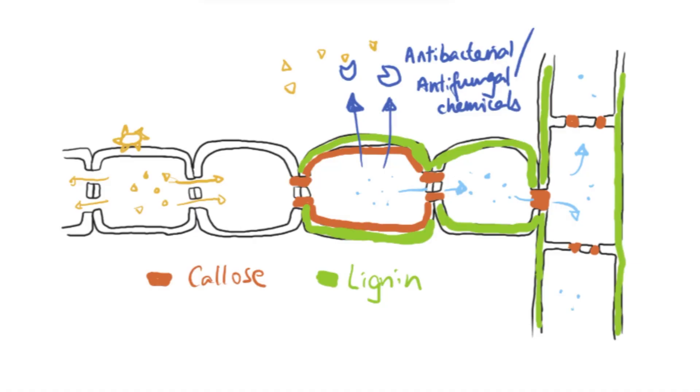plant cells release chemicals to signal adjacent cells about the infection, which can travel to other parts of the plant. Once they receive the signal, this causes production of callose and lignin to be deposited onto the cell walls or between the cell wall and membrane, and also blocks the plasmodesmata and sieve plates to prevent further spread of the pathogen.